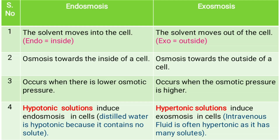Now let's see the differences between endosmosis and exosmosis. First difference: in endosmosis — endo means inside — the solvent moves into the cell. In exosmosis, the solvent moves out of the cell.